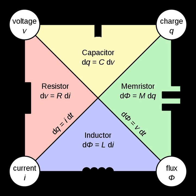Inductance L, measured in henrys, produces the magnetic flux proportional to the rate of change of current through the element. It relates flux and current according to the relation dϕ = L di.